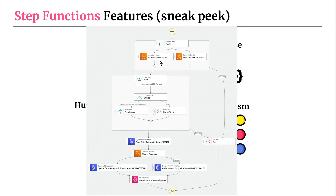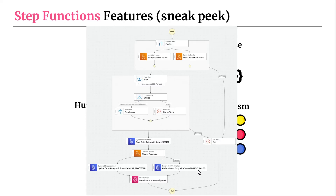Once we have the stock levels and verify the payment details — assuming both were a success — we move on to verifying that all items in the order have a stock level greater than one. We use a map state, which is essentially a for loop, and then a choice state to say if the quantity of stock for each item is greater than one, go to the next step; if not, fail the Step Function. Assuming this all works successfully, we move on to saving the order entry to DynamoDB, charging the customer, and if we fail to charge the customer, we set the payment failed state on our DynamoDB table. If we succeed, we say payment is processed and broadcast that notification to interested parties. This is exactly what we're going to be building later in the course as part of that practice lab.